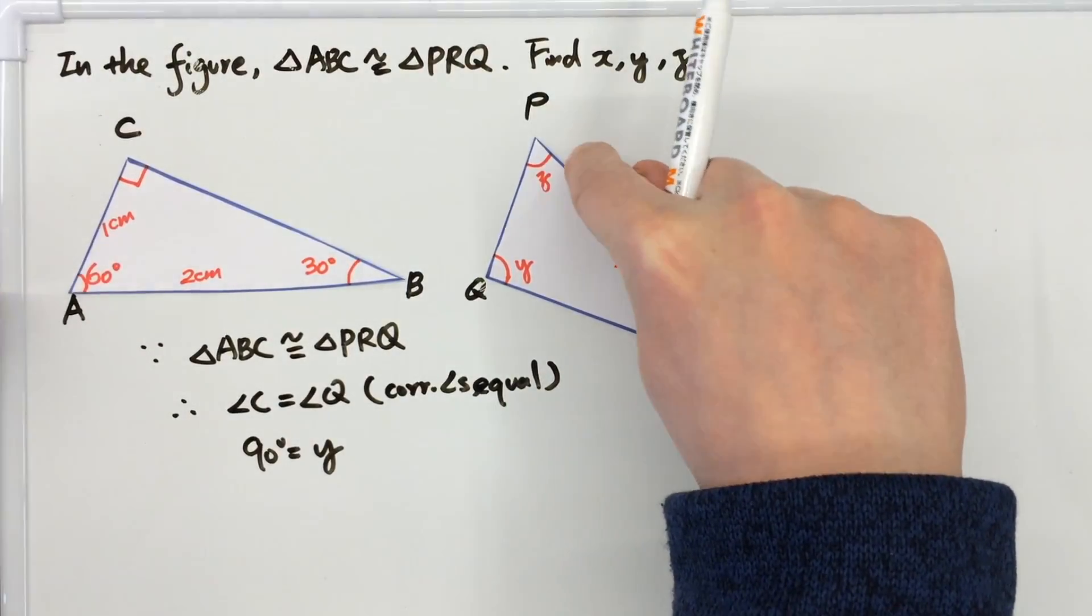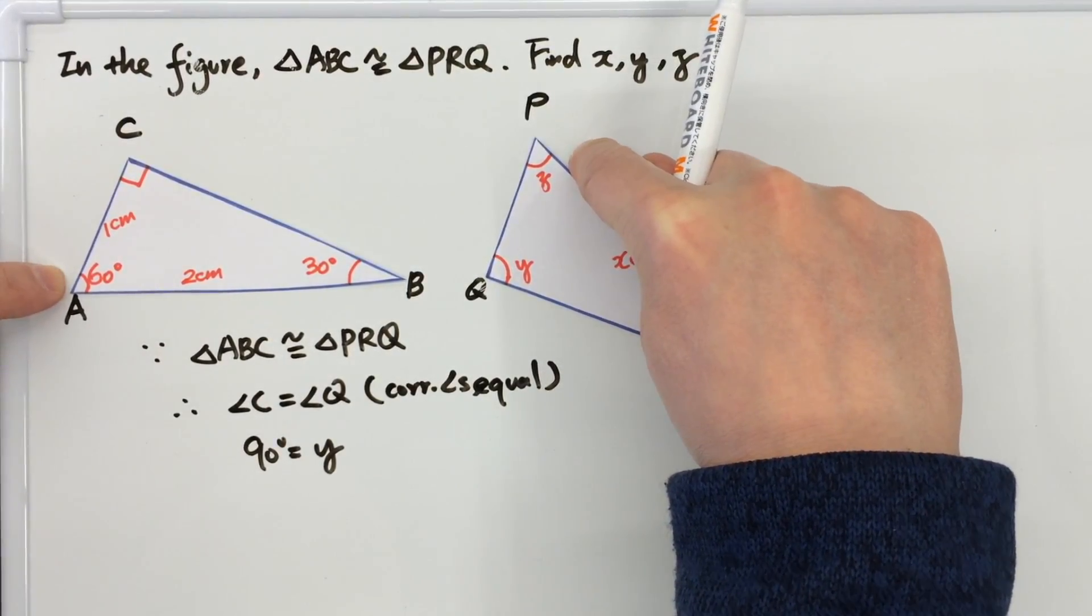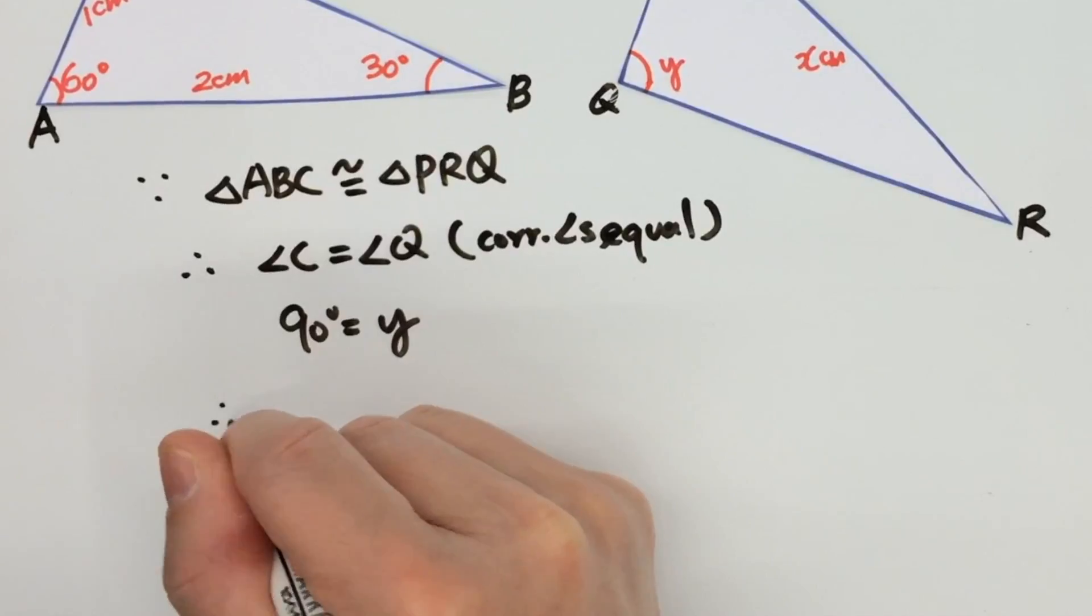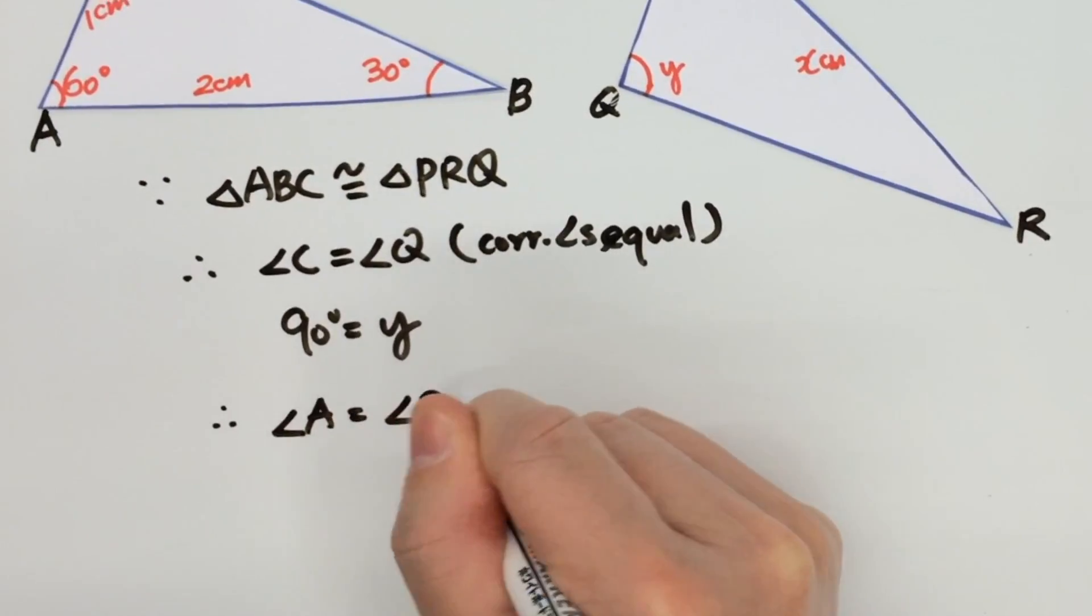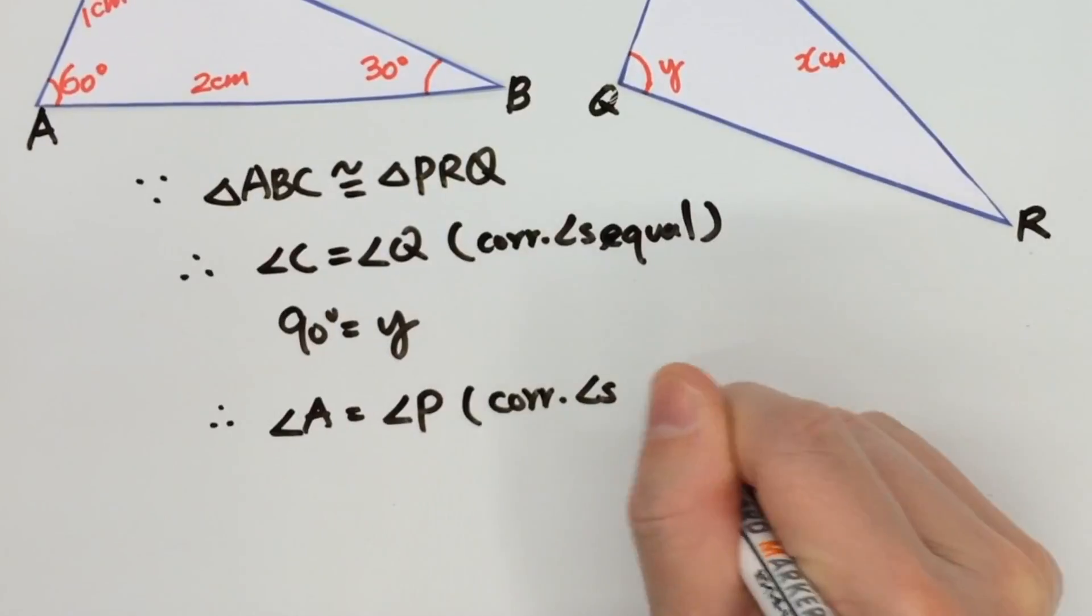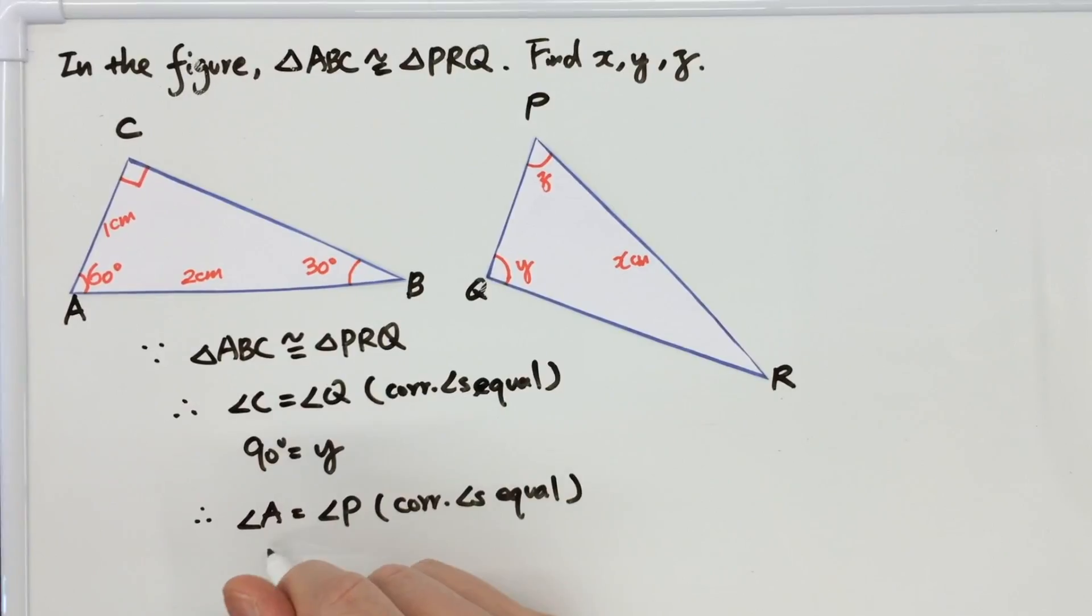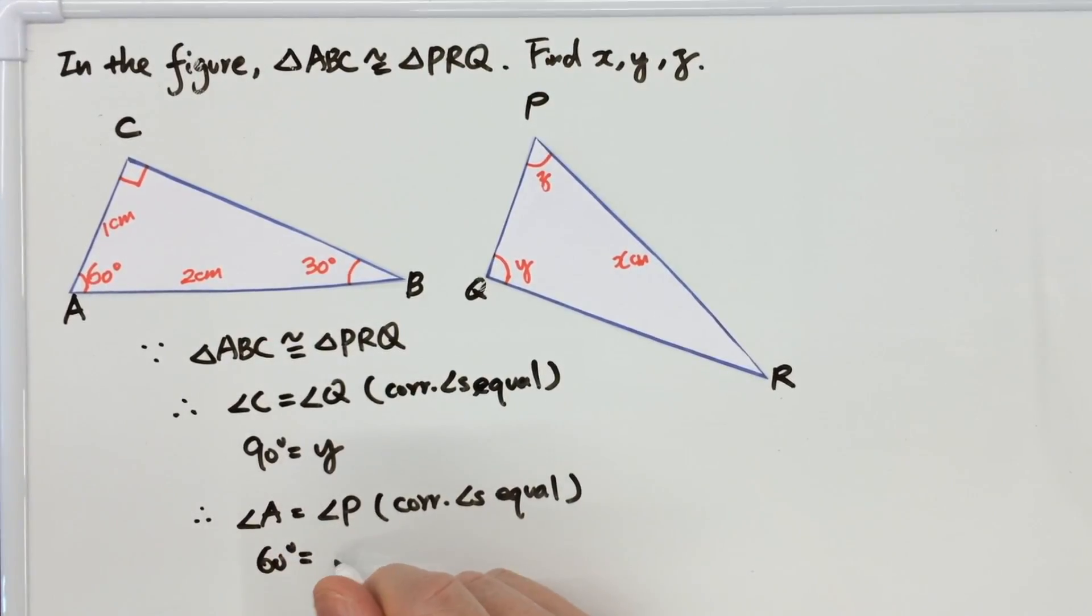And what about z? z will correspond to angle A, P to A. And the reason is also corresponding angles equal. Therefore, angle P is z.